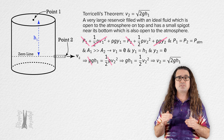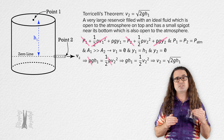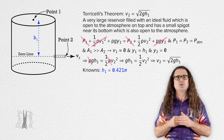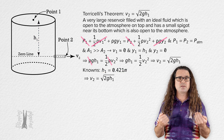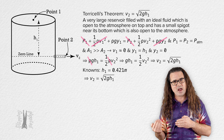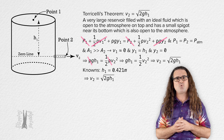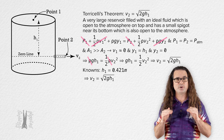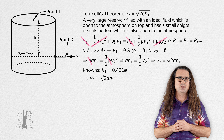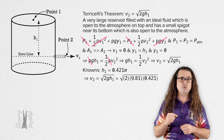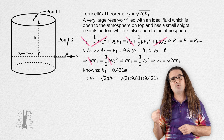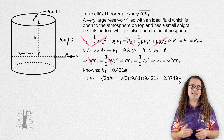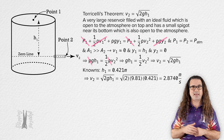The vertical height of the drain pipe above the spigot is 0.421 meters. So we can use Torricelli's theorem, which we derived, to determine the speed of the water coming out of the spigot — the speed at point 2. It equals the square root of 2 times 9.81 times 0.421, or 2.8740 meters per second.